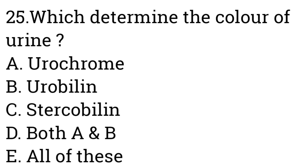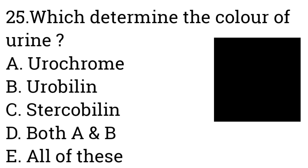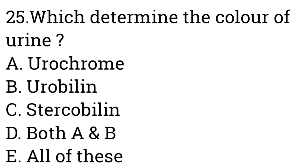Question number twenty-five: Which determines the color of urine? A: Urochrome, B: Urobilin, C: Stercobilin, D: A and B, E: All of these. Answer is both A and B. Urochrome is also called urobilin, which determines the color of urine, whereas stercobilin determines the color of fecal material.